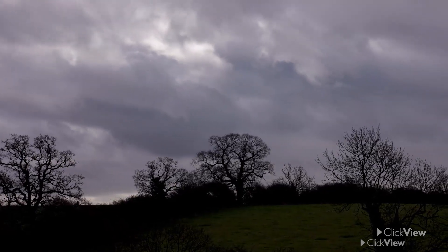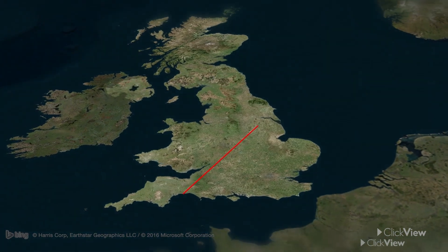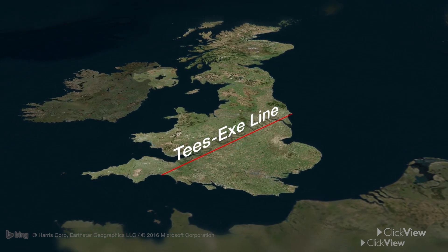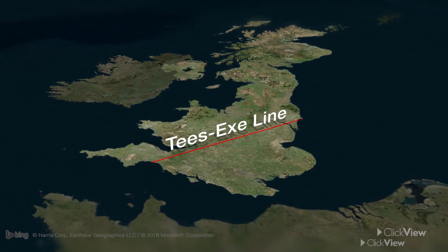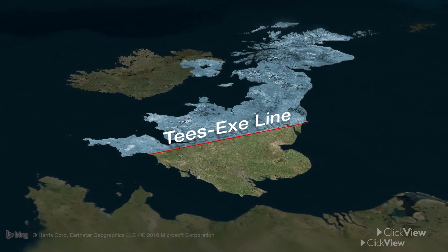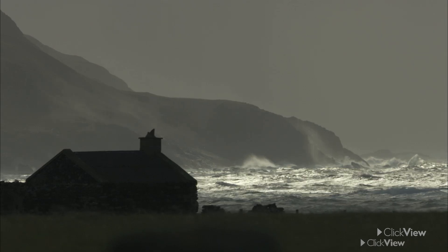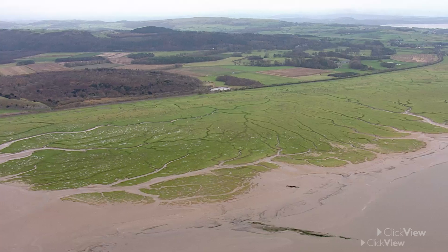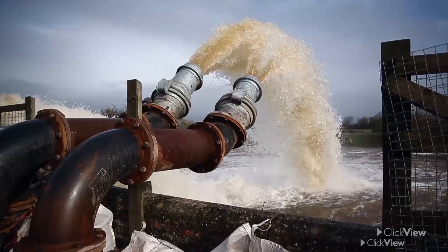The distribution of rainfall in the UK is uneven across the country. This map shows the United Kingdom divided by the Tees-Exe line — a longer line linking the Tees River and Exe rivers in north-east and south-west England. To the north and west of this line, rainfall is higher than average, often reaching 1,500 to 2,000 millimetres per year. Population density here is lower than average, so demand is small. Areas like this are known as water surplus areas because they have more water than is needed to meet the population's needs.